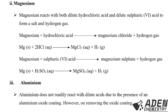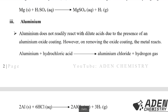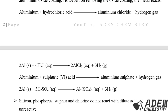Aluminium does not readily react with dilute acids due to the presence of an aluminium oxide coating. However, on removing the oxide coating, the metal reacts. Aluminium with dilute hydrochloric acid gives aluminium chloride and hydrogen gas, and aluminium with dilute sulfuric acid gives aluminium sulfate plus hydrogen gas. Both reactions have balanced chemical equations provided.